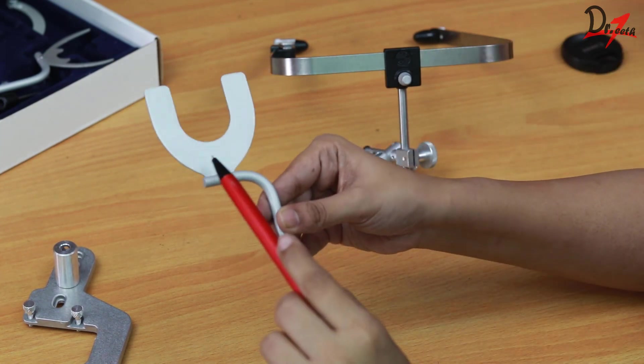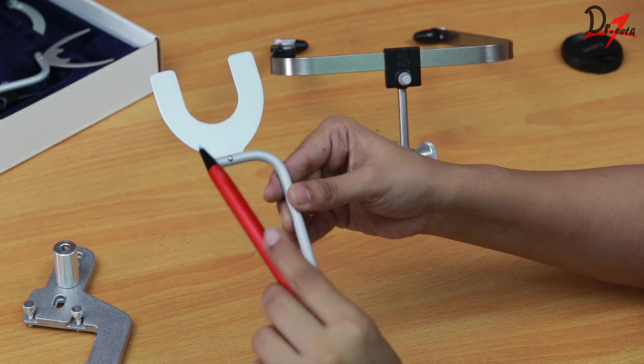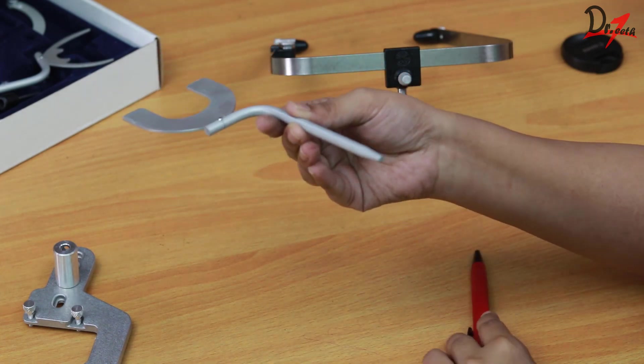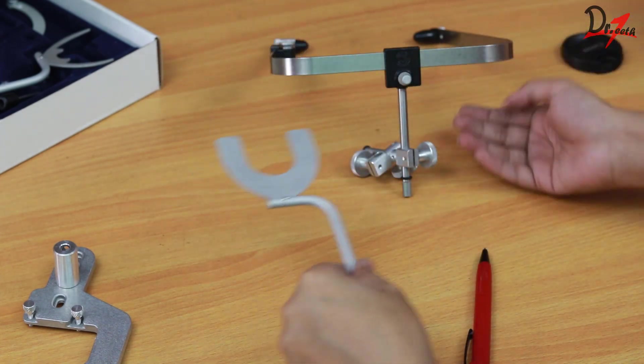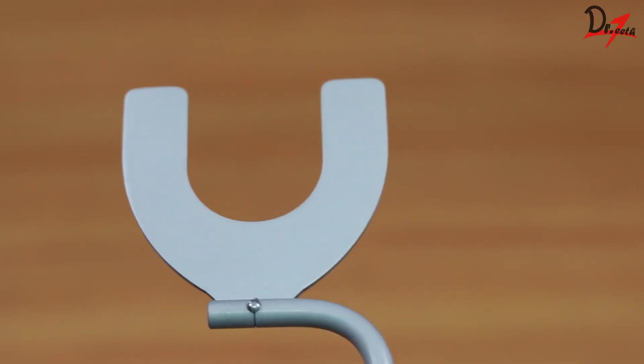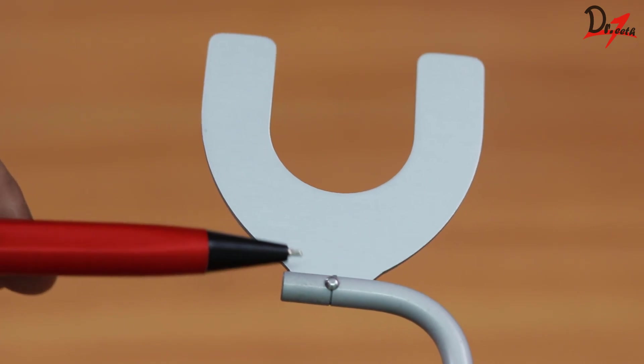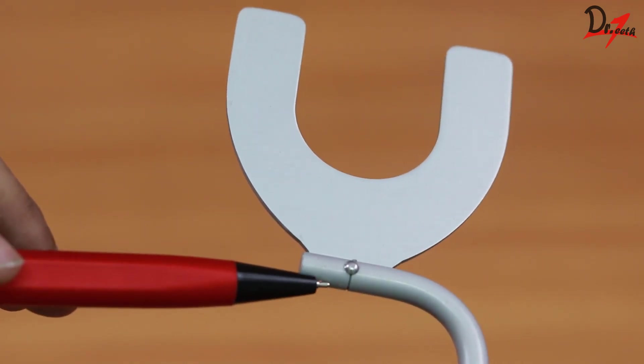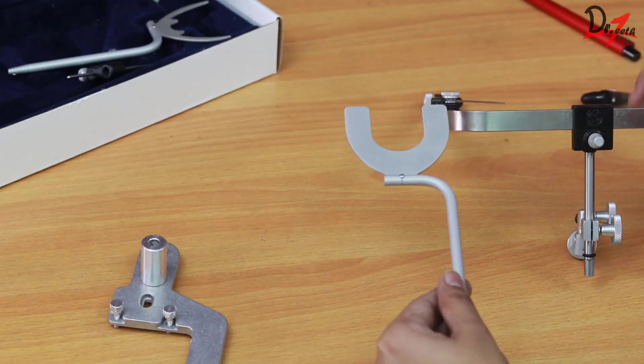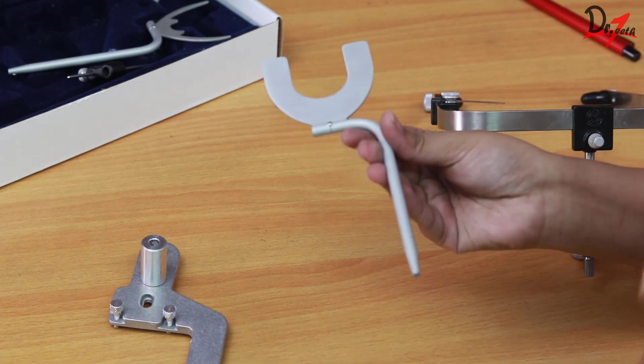And you can see the thumb screws, they have to be loosened completely so that we can adjust it according to the patient. Now that we have done that, we will take the bite fork, make sure that the pointed tip of the fork should be superficially. And the midline of the fork, which is represented by this line, should be according to the midline of the patient.